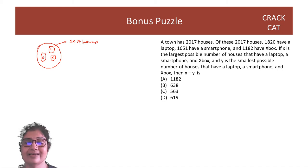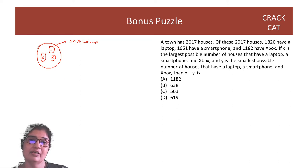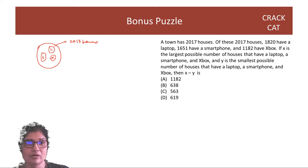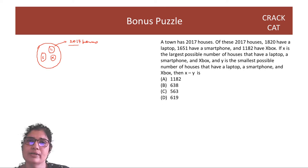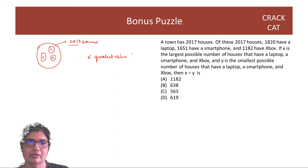This is obviously impossible — I cannot have non-intersecting circles, because if I add up these three numbers it is greater than 2017. So obviously they have to intersect. What do we have to find out? We have to find out x, which is the greatest possible value of people having all three.